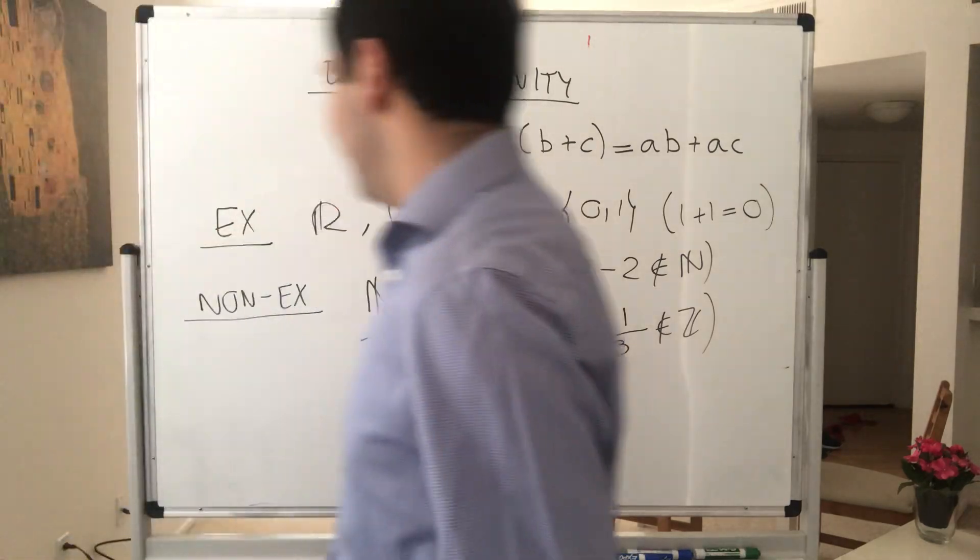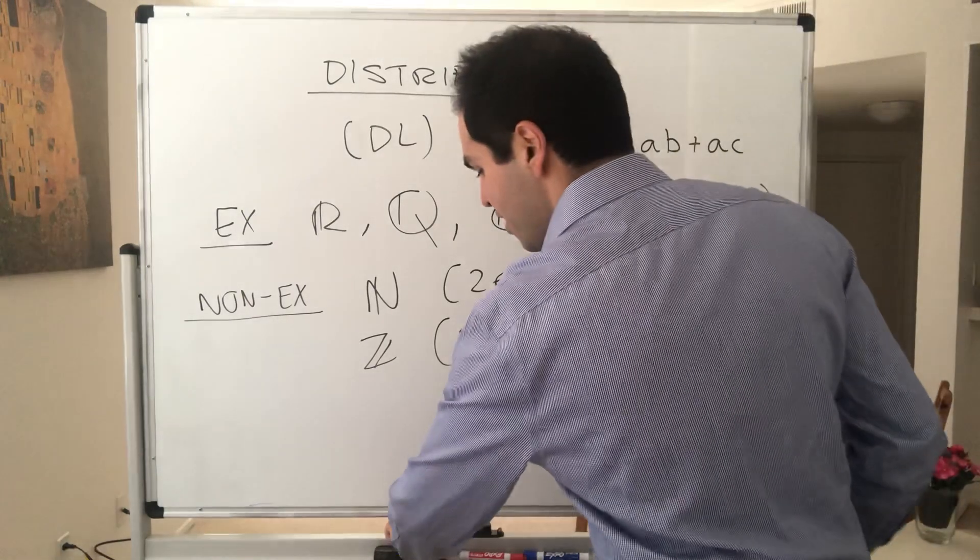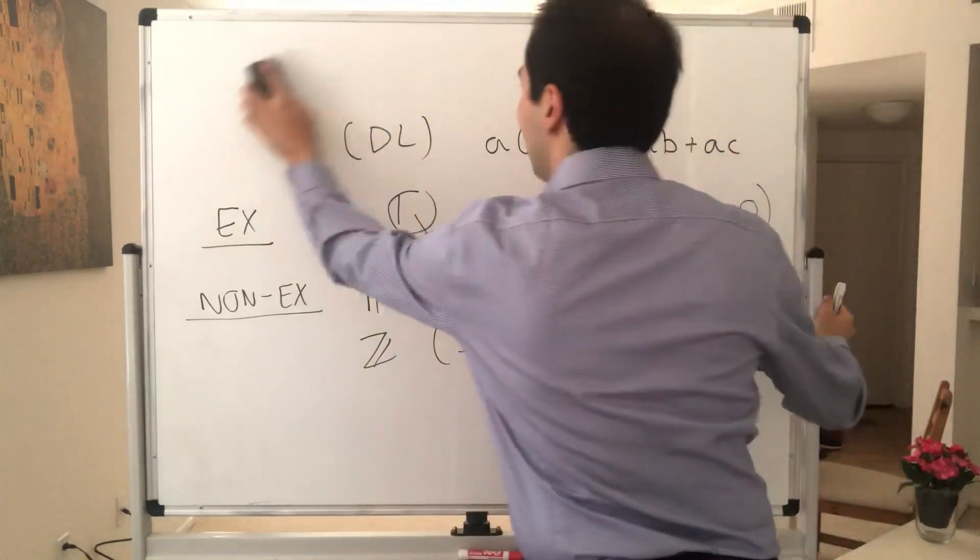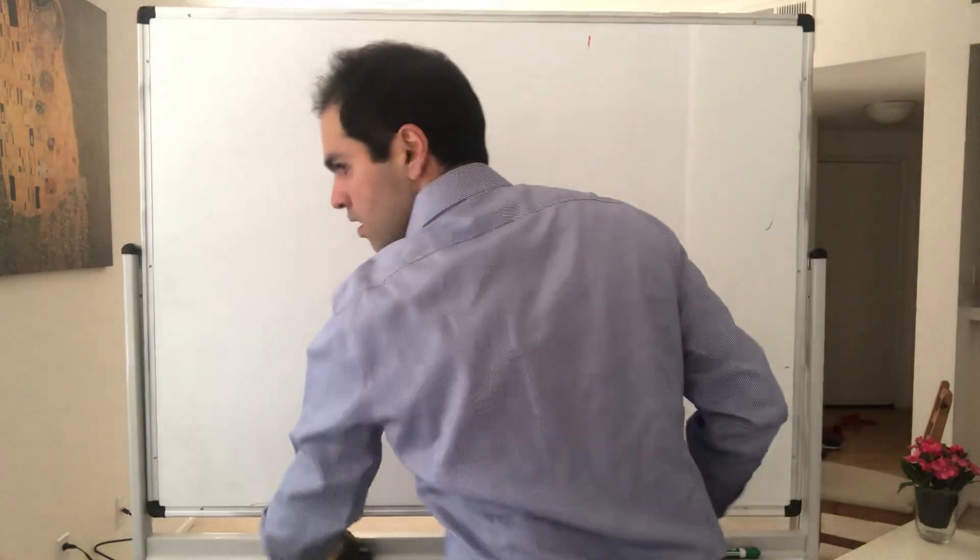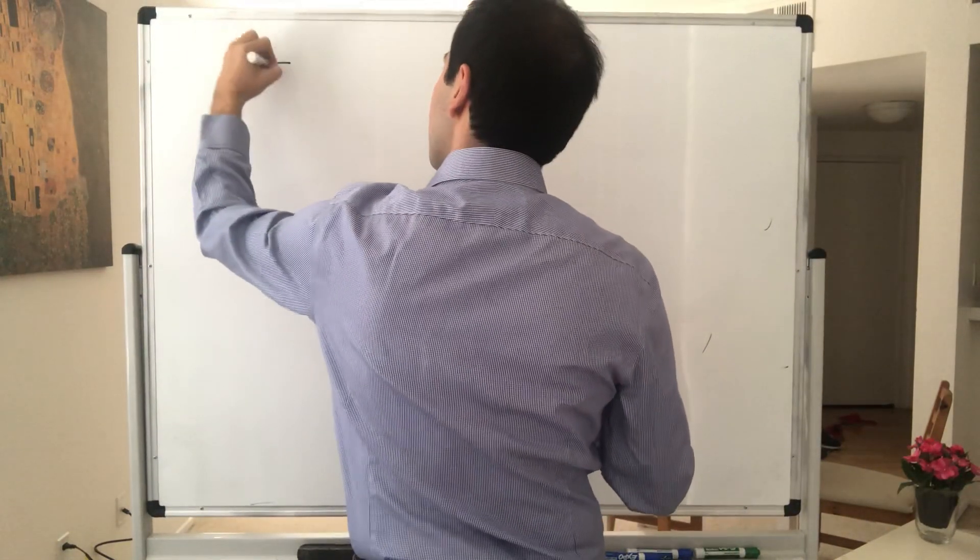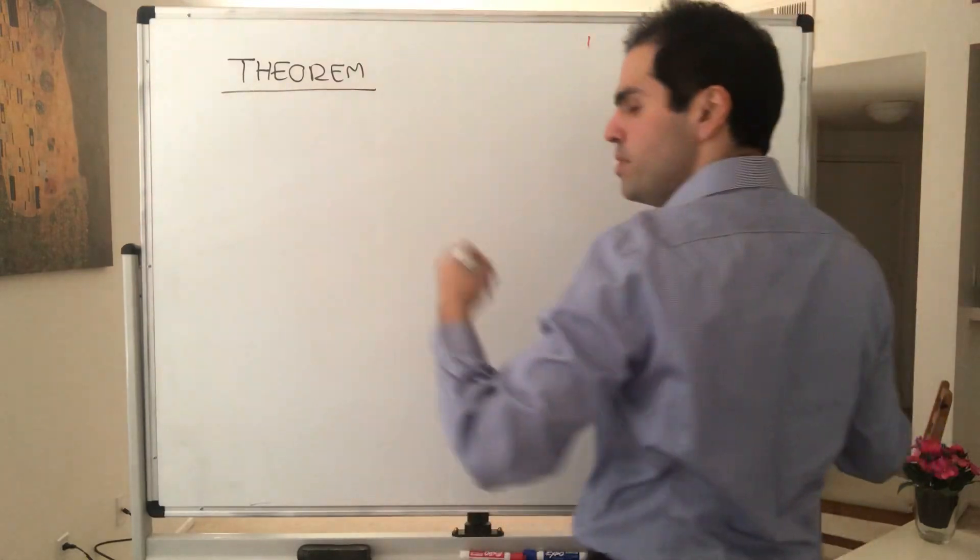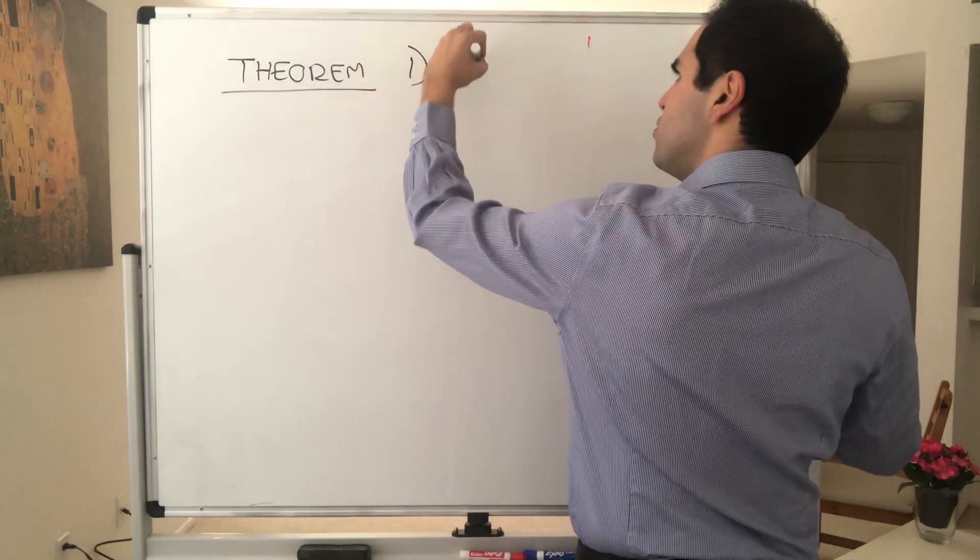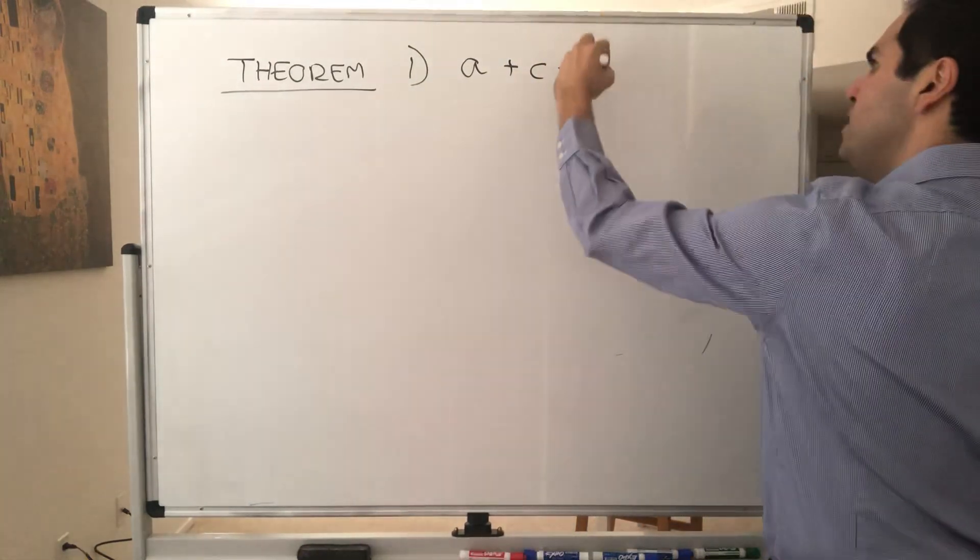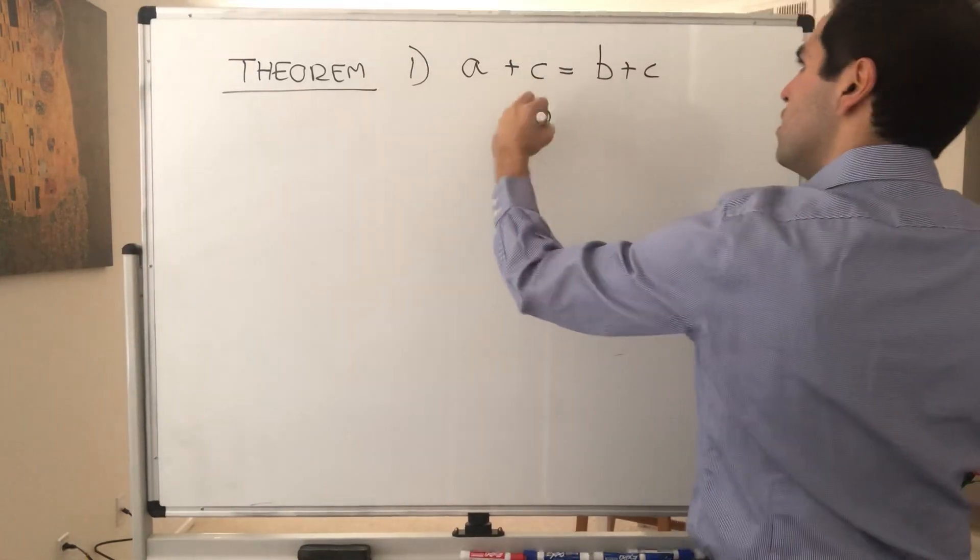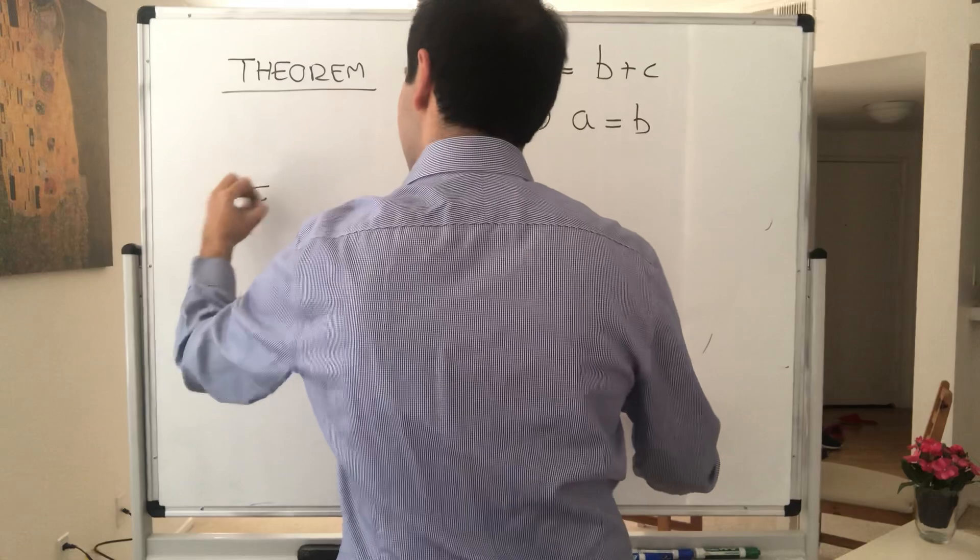And the nice thing is from that we can prove some nice facts about fields, and in the next seven minutes or so, I will prove a couple of them. So theorem. Again, the following are true for any field. So, and again, a, b, and c are elements in the field. So, first of all, a plus c, there's a cancellation law, a plus c equals b plus c implies a equals b. And why not? Let me prove this right away.